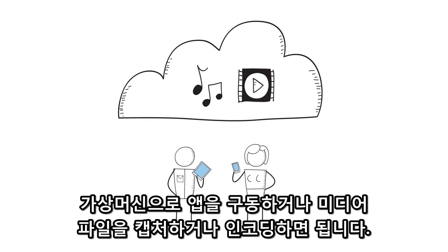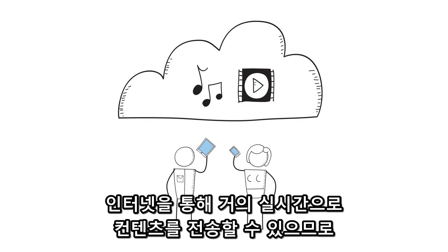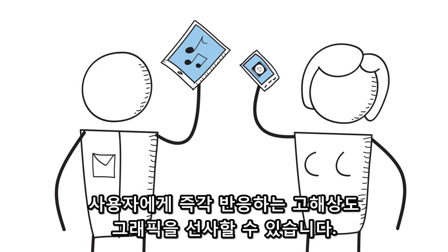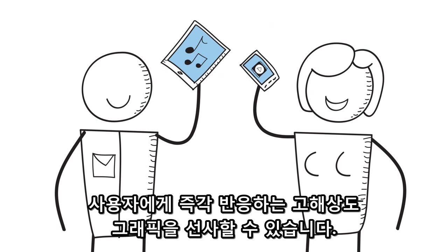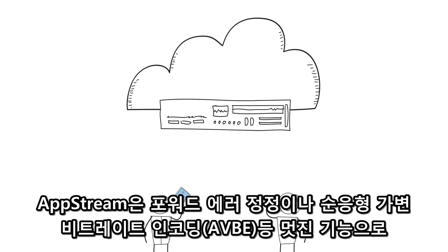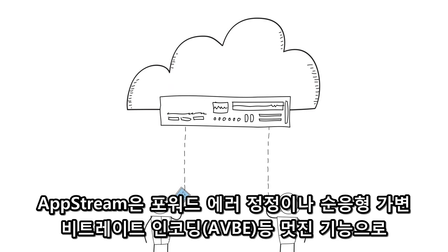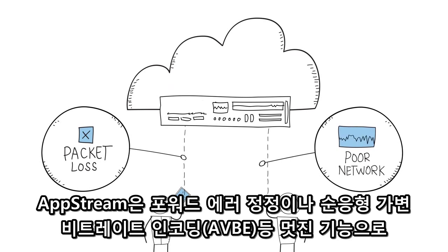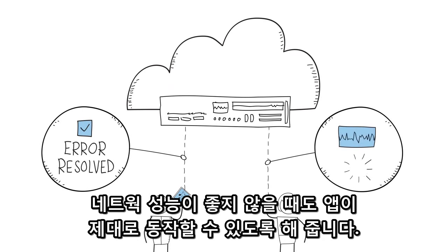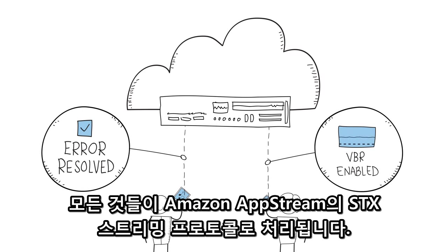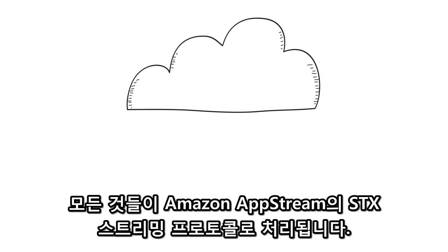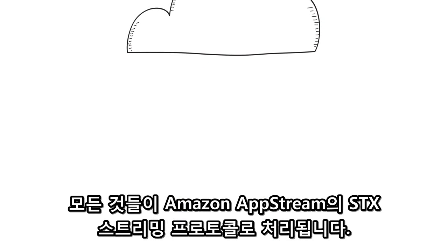Capture and encode audio and video, and deliver the content over the internet in near real-time, so your users get a responsive, high-definition experience. AppStream also does cool things like forward error correction and adaptive variable bit rate encoding to make sure that even if network performance isn't great, your application experience can be. This is all handled by Amazon AppStream's STX streaming protocol.